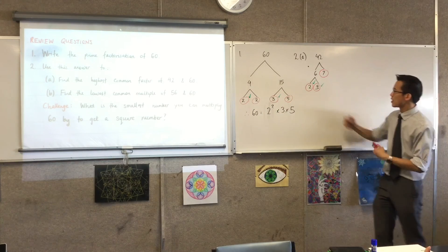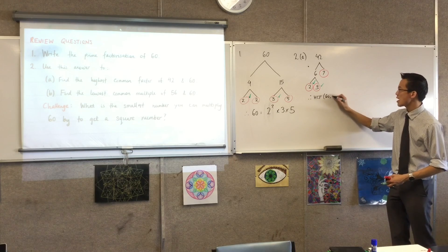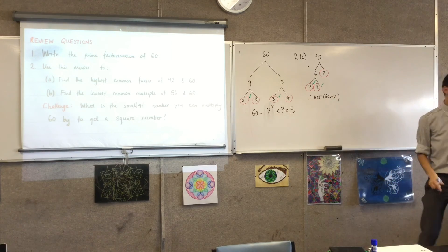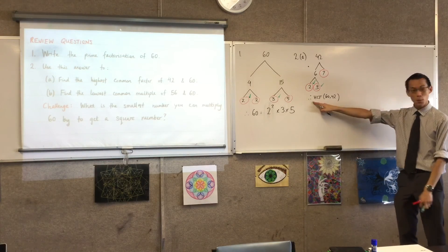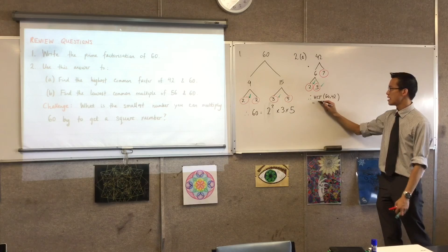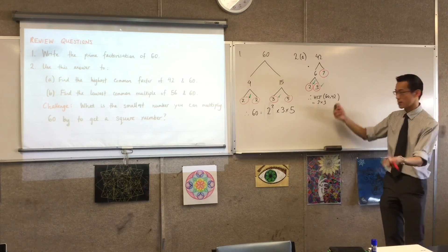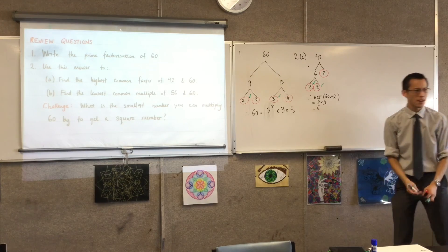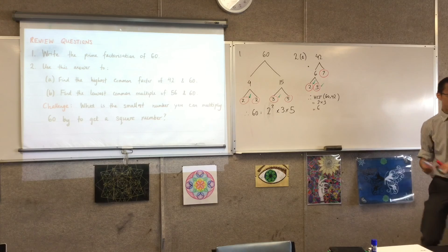So I'm going to say therefore the highest common factor of 60 and 42 - you see this is a really condensed abbreviated way of saying it - the highest common factor of these two numbers is two times three. But Jim, of course, six. And you can check it. Six does divide into both. Quite nice.